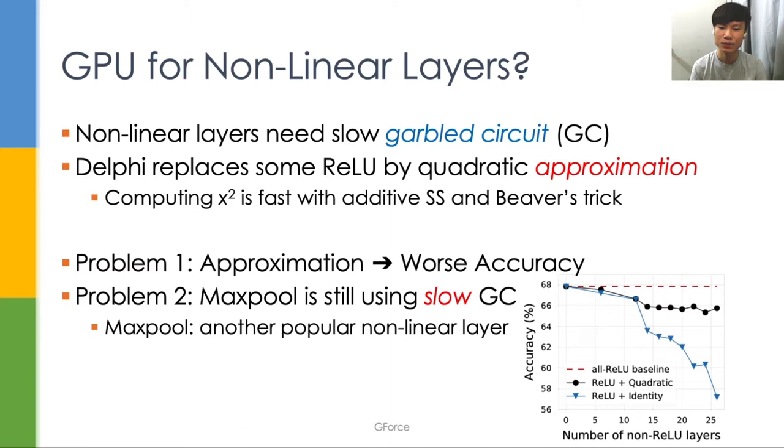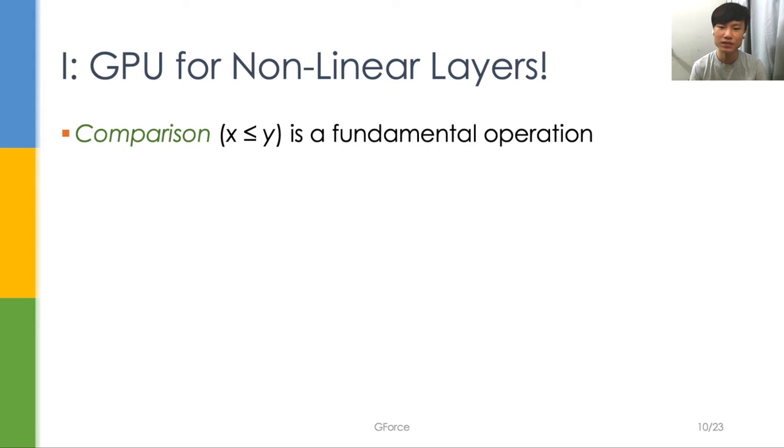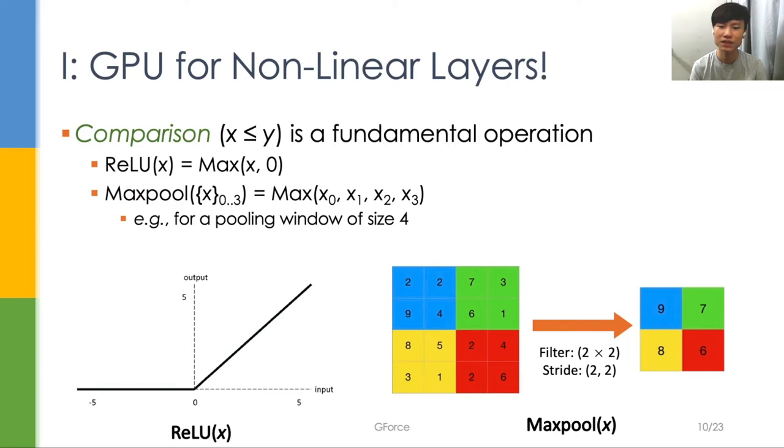On the other hand, MaxPool, another particular choice of nonlinear layers, still needs to use the slow garbled circuit. A way to utilize GPU throughout the inference starts with an observation that comparison is an essential operation for nonlinear layers.